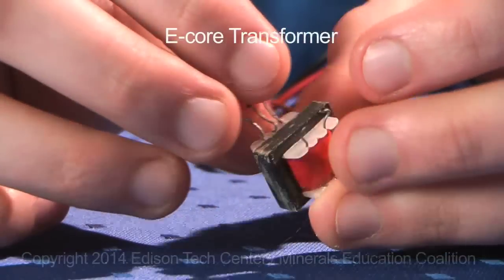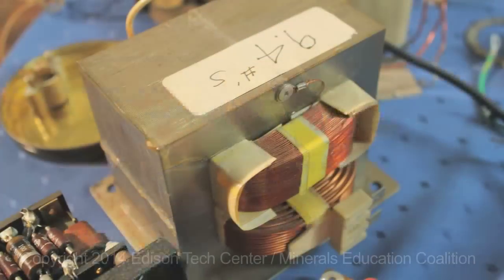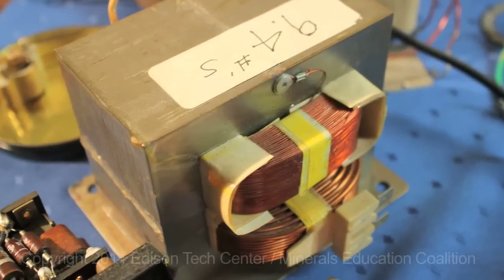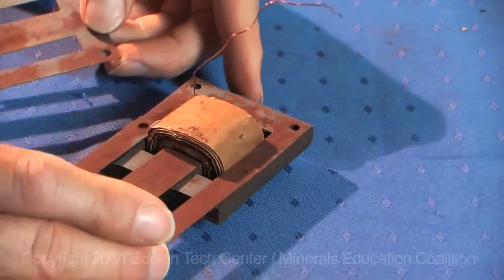This is made up of what's called steel laminations. There's a bunch of plates of steel all sandwiched together to make up this core.